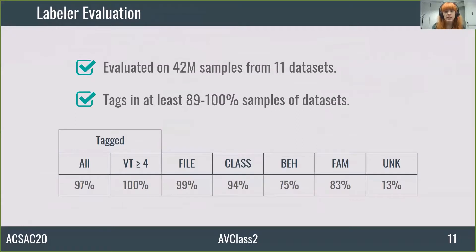Let's move on to the evaluation. We evaluated AV Class 2 on 42 million samples from 11 datasets. The results show that AV Class 2 can extract at least one tag from 89% to 100% of samples, depending on the dataset. Thus, it is possible to index the majority of the samples. The files for which no tags can be extracted largely correspond to those with very few detections. When considering samples flagged by at least 4 AV engines, the fraction of tagged samples is at least 99%. The most common tags are file properties, followed by malware classes, known families, and behaviors.